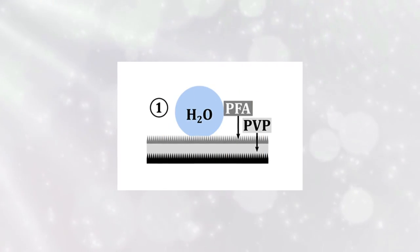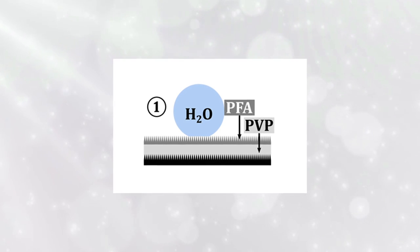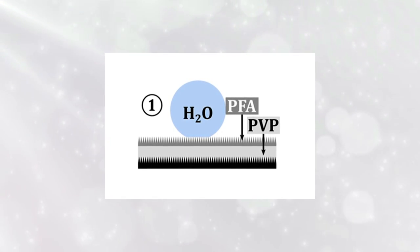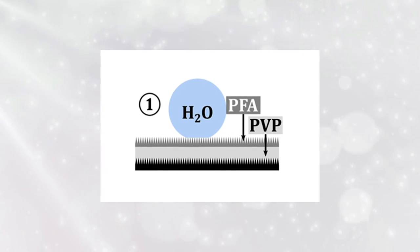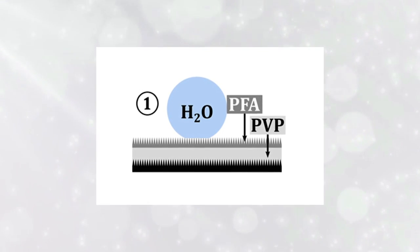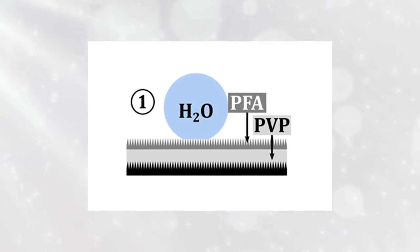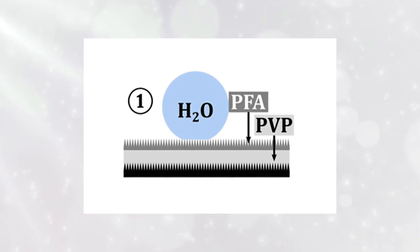To accomplish this, the researchers stacked three films to create their material. The top layer was made of water-repellent PFA nanograss, a miniature lawn of tiny needle-like structures. The next layer consisted of a water-soluble PVP polymer, and on the bottom was a superhydrophobic silicon nanograss film.